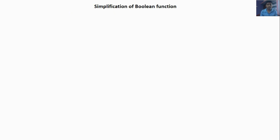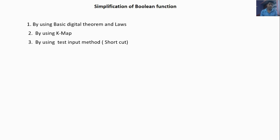You can simplify the Boolean function by using digital theorems such as De Morgan's theorem, associative law, and distributive law. The second method is to simplify the Boolean function by using K-map. Then there is the test input method. Using digital theorems and laws, the way of simplification will be different, so you may not get the option as the answer. If you use K-map, it gives the fully simplified form but the option may be a partial simplified form, so it will be confusing.